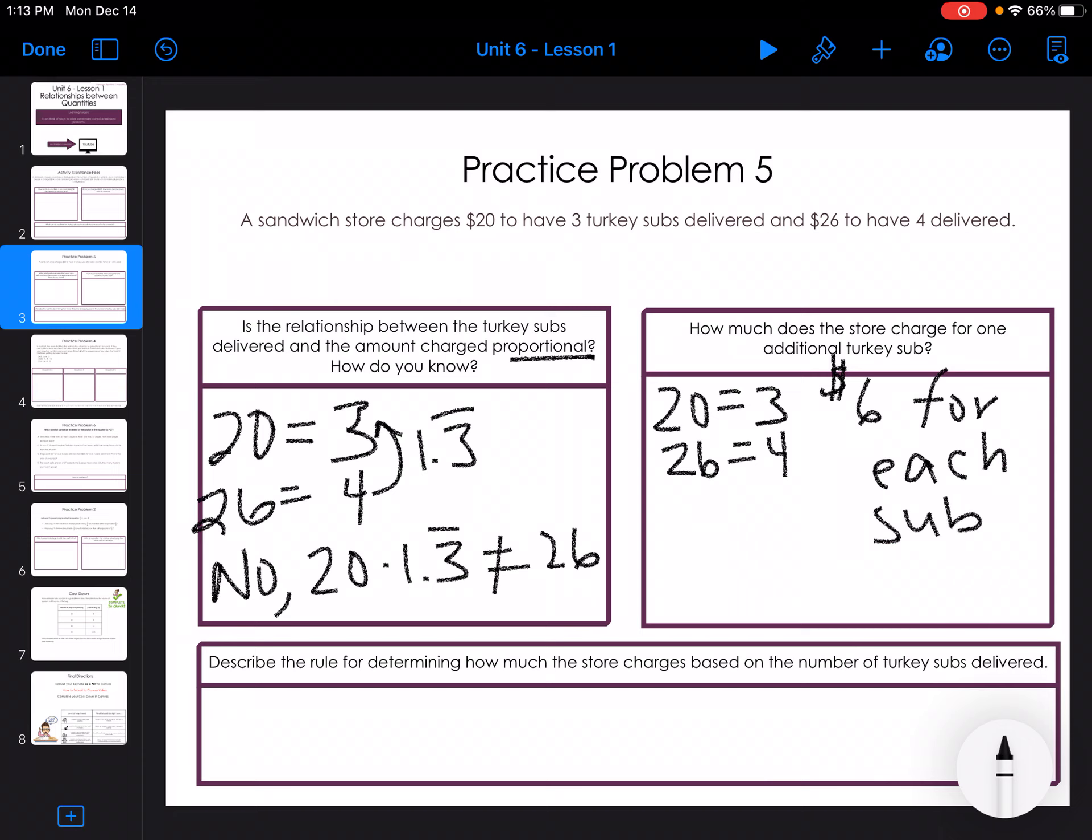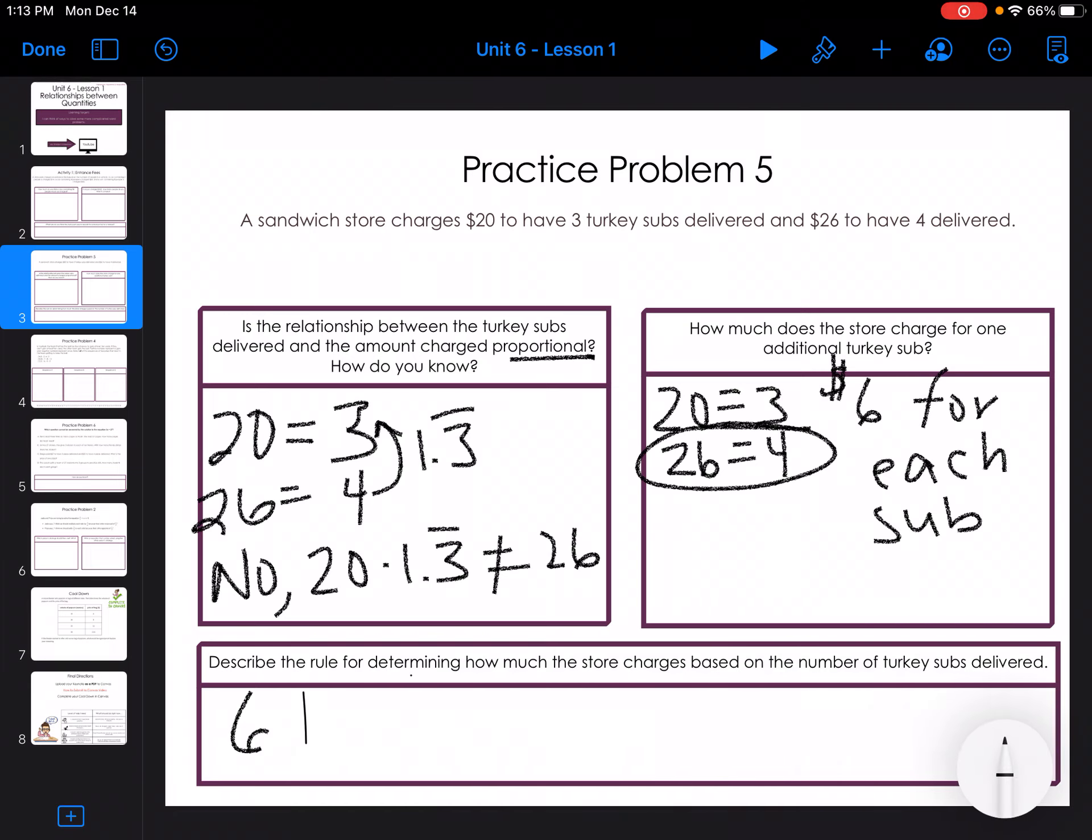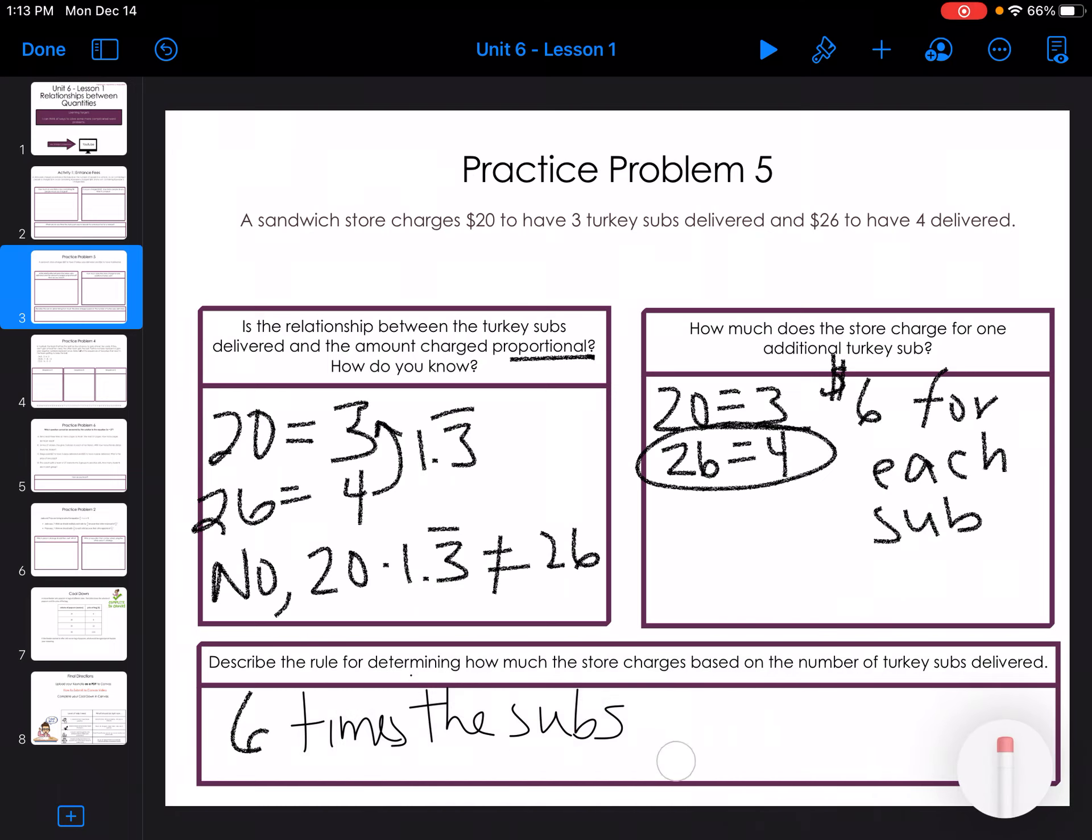Okay, so if I'm describing the rule, it would be six times the number of subs is equal, and then we'd have to add two. So plus two for delivery. Because six times three would be 18 plus two is 20. Six times four is 24 plus two would give me 26. So that would be my rule.